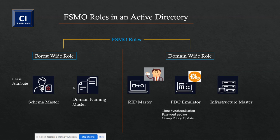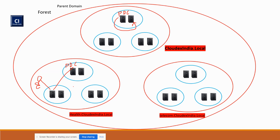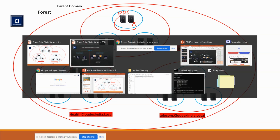Next is group policy update. Always remember: you cannot manage group policy unless your PDC is available. All group policy jobs are managed by the PDC emulator. If you want to create a group policy, you connect as an administrator to the domain controller, open gpmc.msc, and it connects to the PDC emulator master, showing the complete list of group policies. If the PDC emulator is not available, the group policy console will open but you will not see any objects — it will give you an error. This is a very critical and important function in Active Directory.